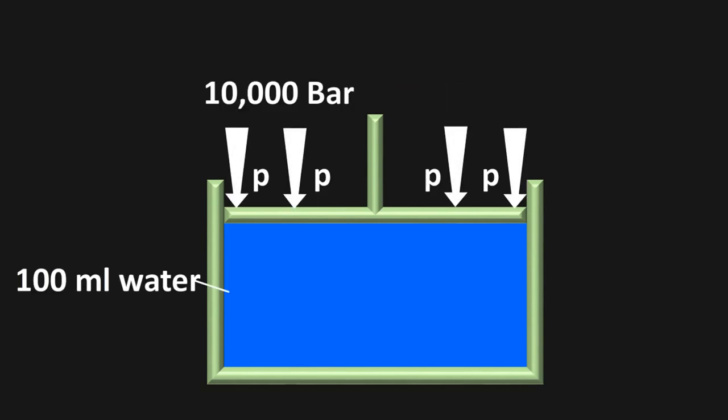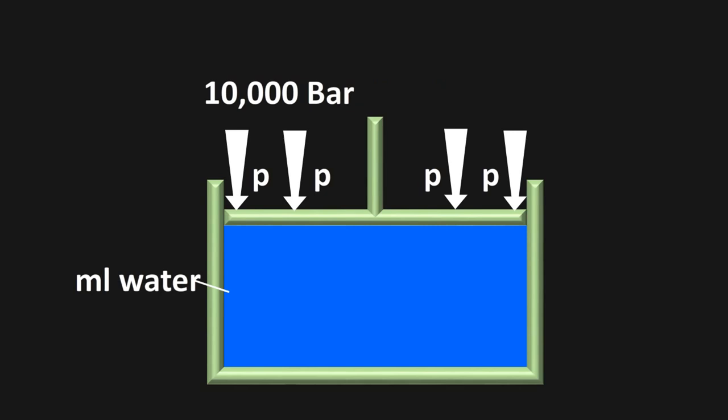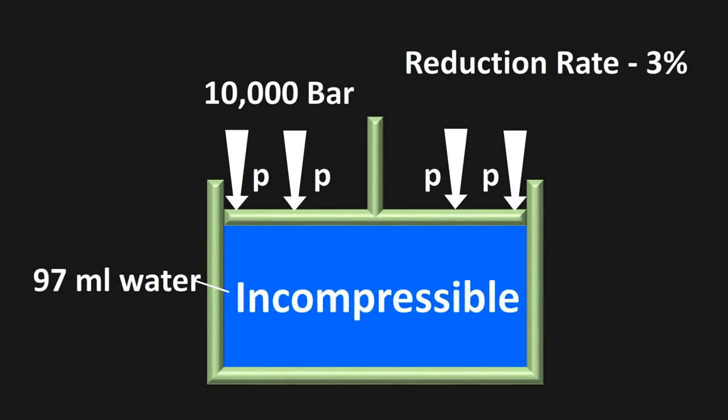Water is also compressible, but its compressibility is very negligible. Like if you pressurize 100 ml of water at around 10,000 bar, it will reduce to around 97 ml, only reduction of 3%. So it's considered as incompressible. But what makes the water so hard to compress?